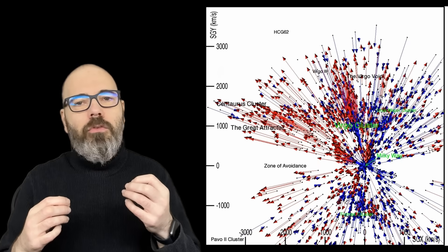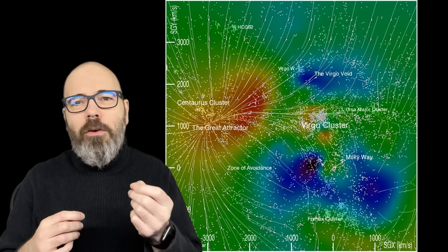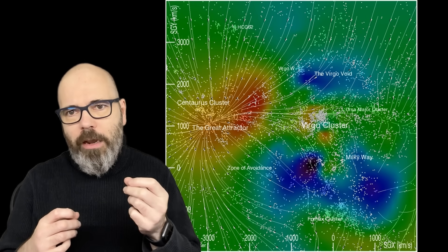Astronomers believe they can measure our motion through the universe with great precision. From the cosmic microwave background, the galaxy flows, to the pull of the greater attractor, they've built a picture of how our cosmic neighborhood drifts through space.